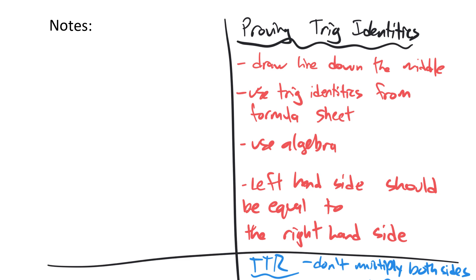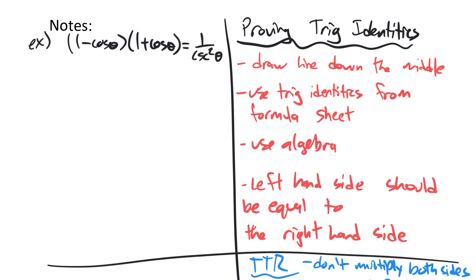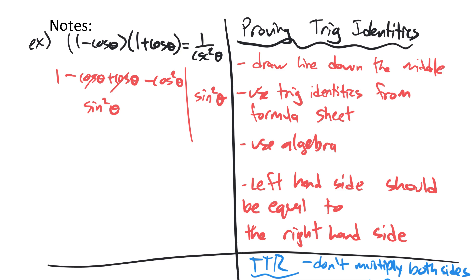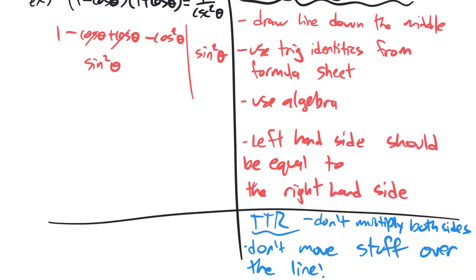For a practice problem: prove that (1 minus cos theta)(1 plus cos theta) equals 1 over cosecant squared theta. The quick solution is to FOIL it out: you get 1 minus cos theta plus cos theta minus cos squared theta. The middle terms cancel, leaving 1 minus cos squared theta, which is sine squared theta. On the right-hand side, 1 over cosecant is also sine squared theta — and we're good to go. You can try more on Unit 7 Worksheet number 2. Hopefully you enjoyed this video, and as always, thanks for watching.